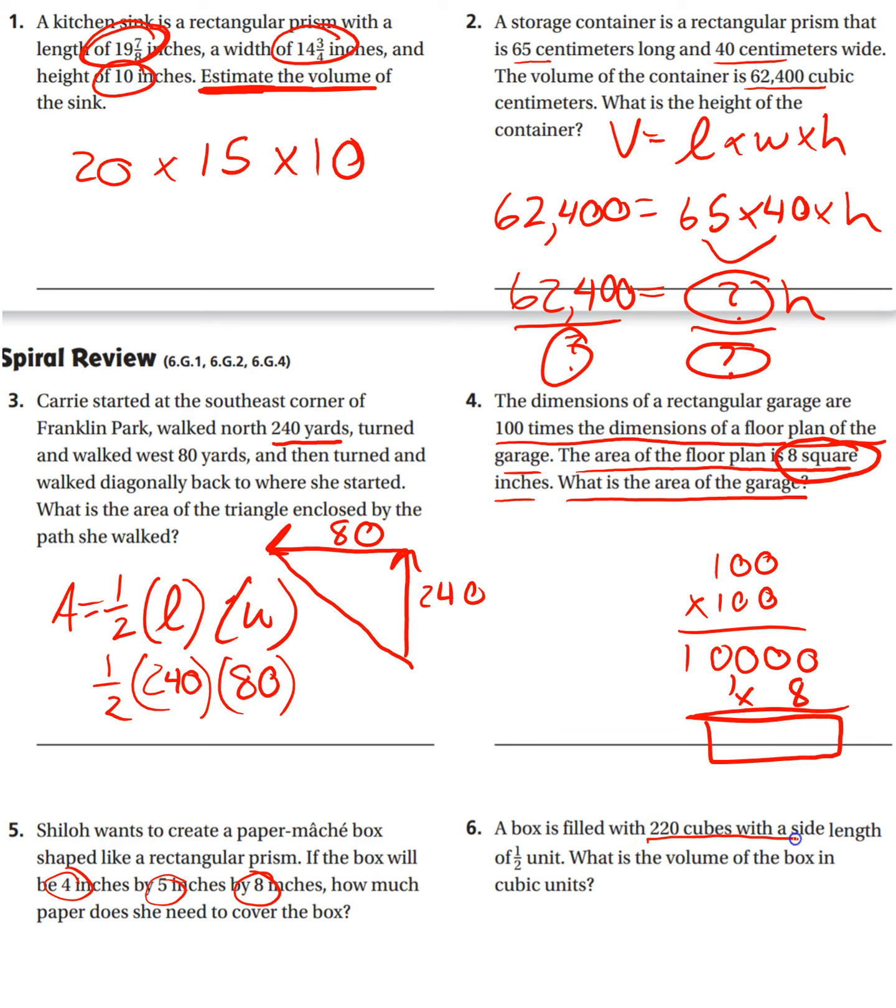Number six, a box is filled with 220 cubes with a side length of a half unit. What is the volume of the box in cubic units? Okay, that would be one. So you have to do one-eighth times 220, which you can put as 220 over one. Remember, it's cubic units, so one-half times one-half times one-half. That's how I'm getting the one-eighth. Cubed means times itself three times.